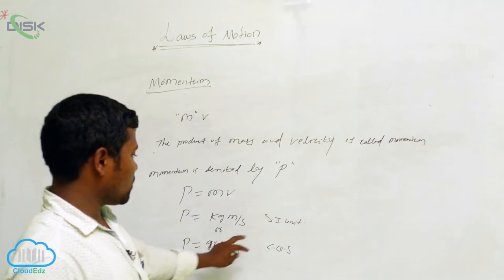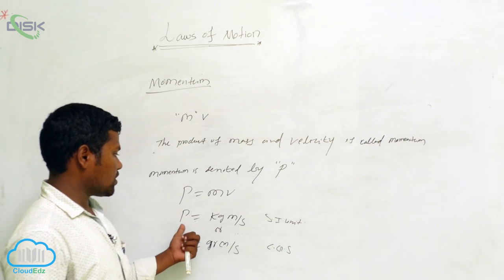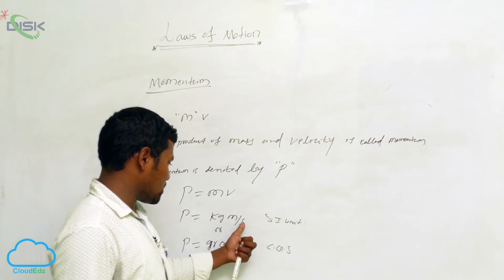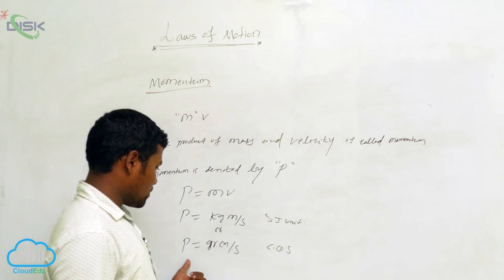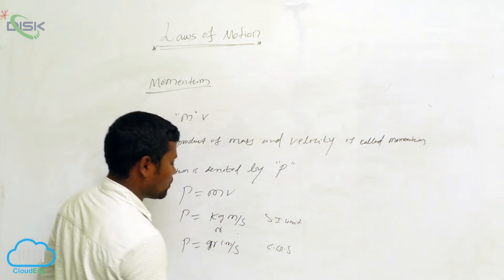Simply momentum, there are two measurements. One is SI unit, another one is CGS unit. SI unit kg meter per second or CGS, gram centimeter by seconds.